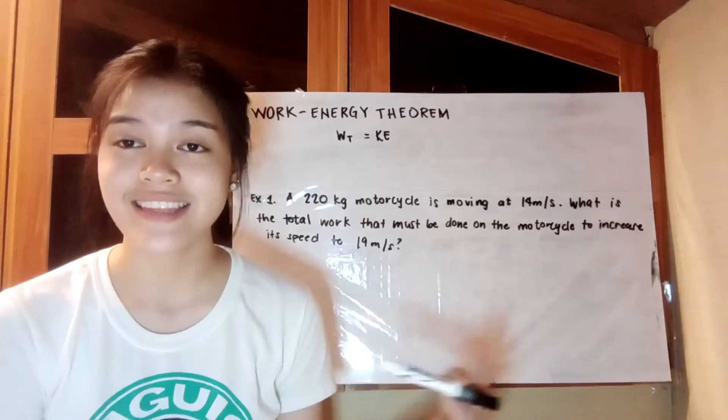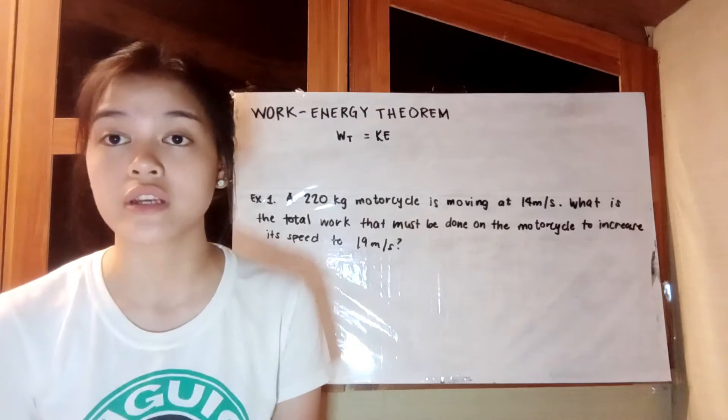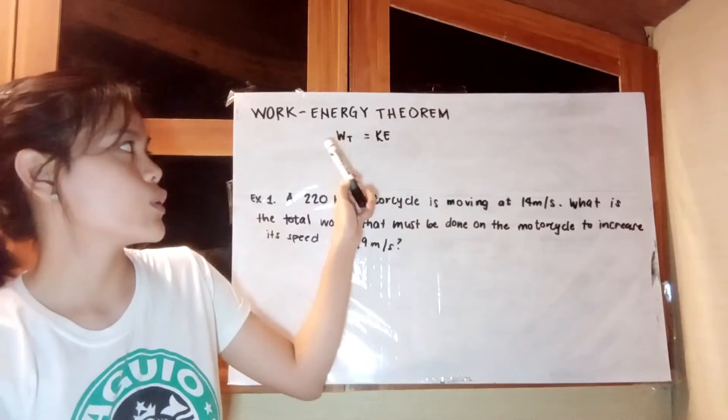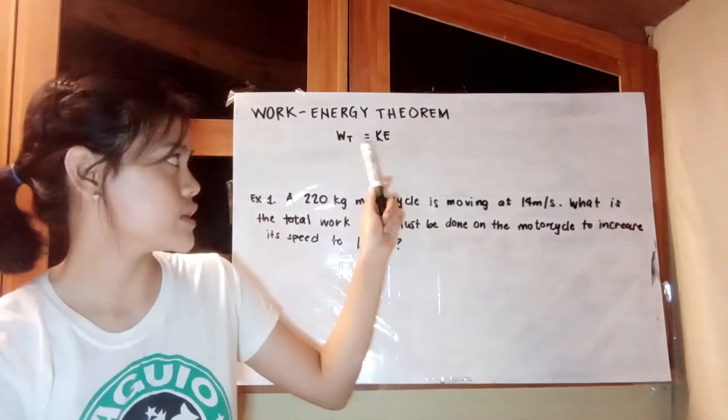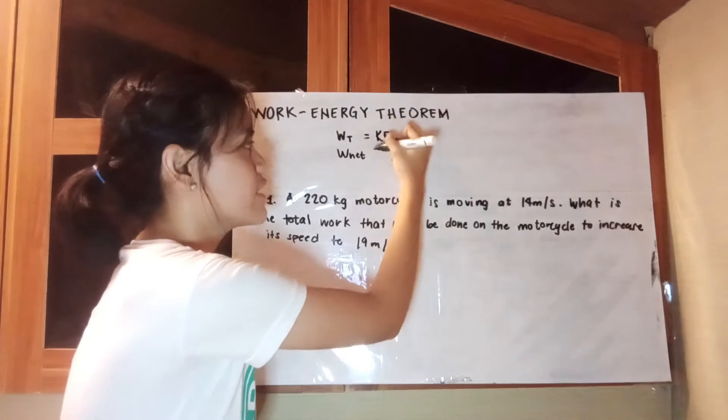This theorem states that the work or the total work that is being done on an object is equivalent to its total kinetic energy. Therefore, we have work, total work is equivalent to kinetic energy, and it can also be equivalent to the network, change in kinetic energy.